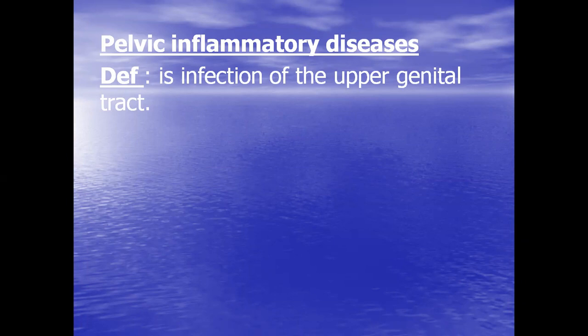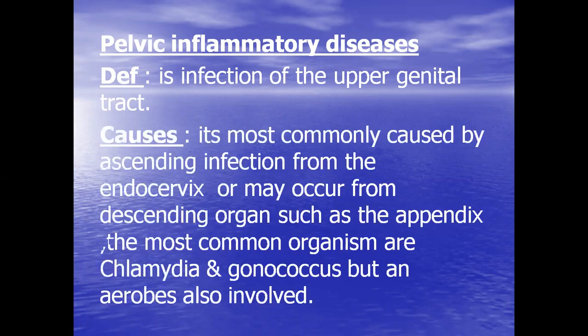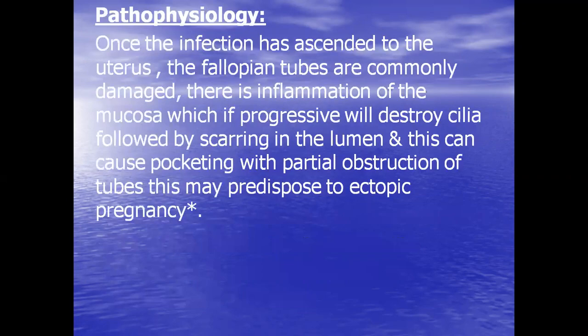What are the causes or etiology? PID is most commonly caused by ascending infection from the endocervix, or may occur from descending organs such as the appendix. The most common organisms are chlamydia and gonococcus, but anaerobes are also involved.